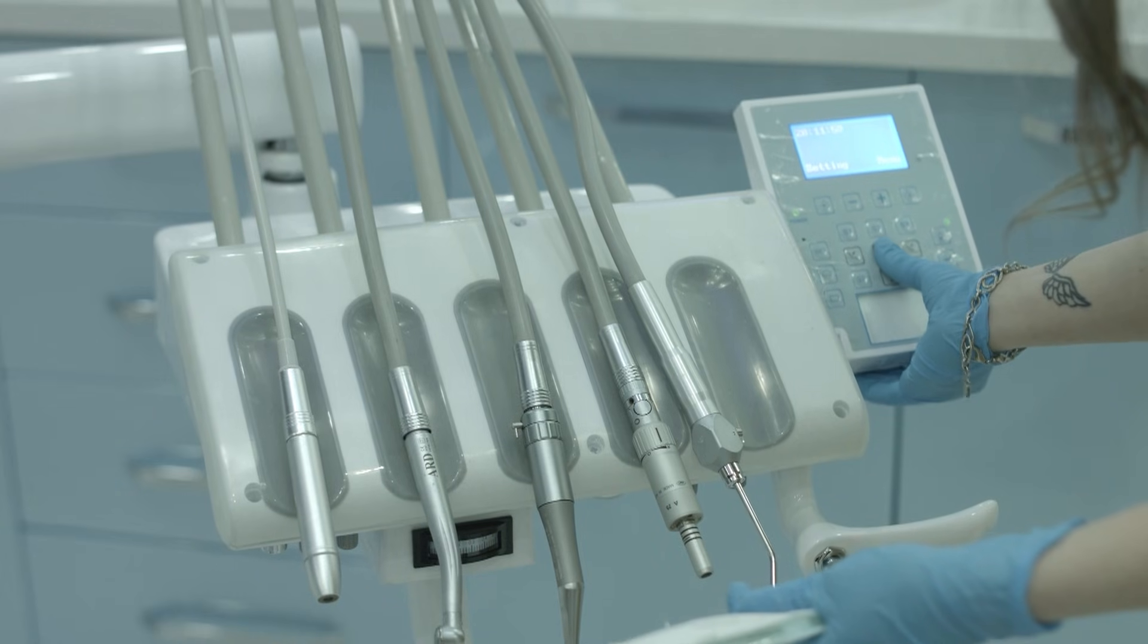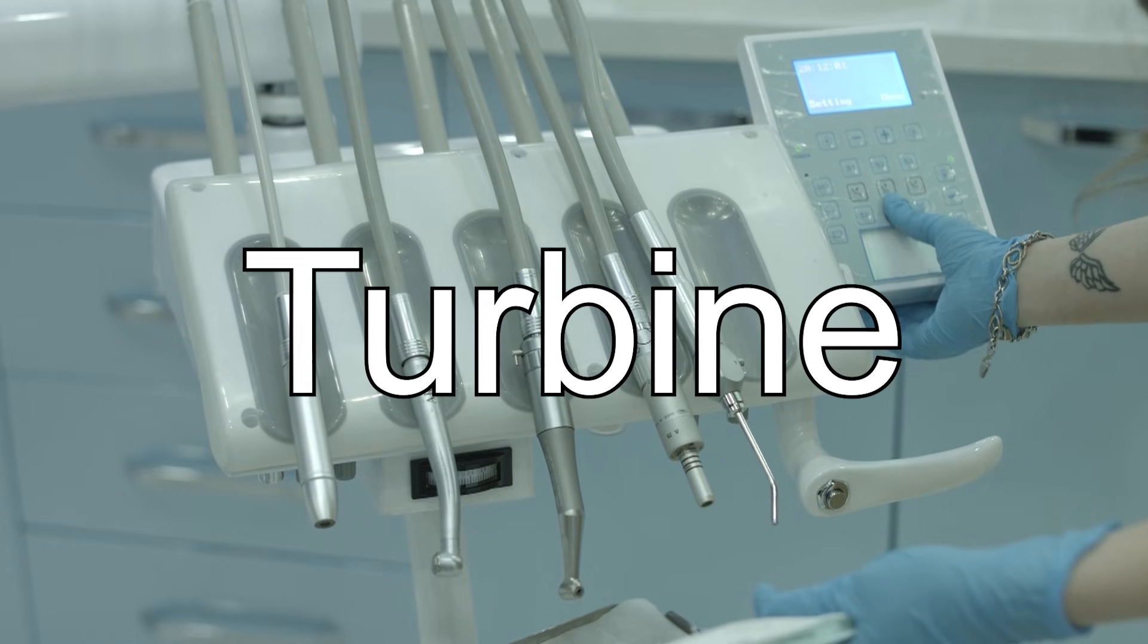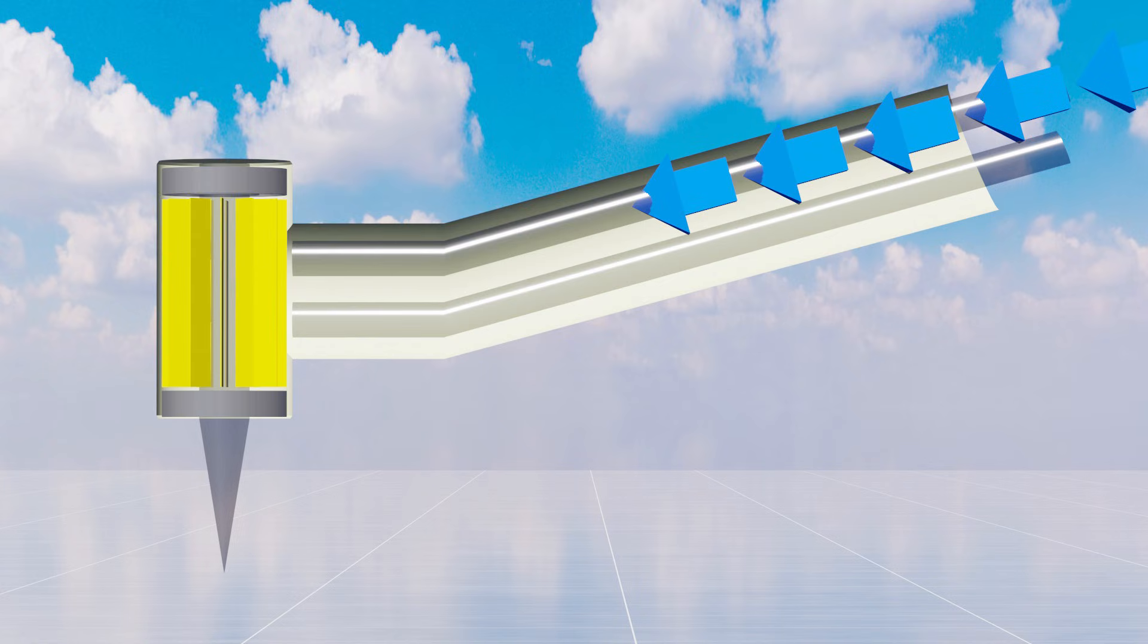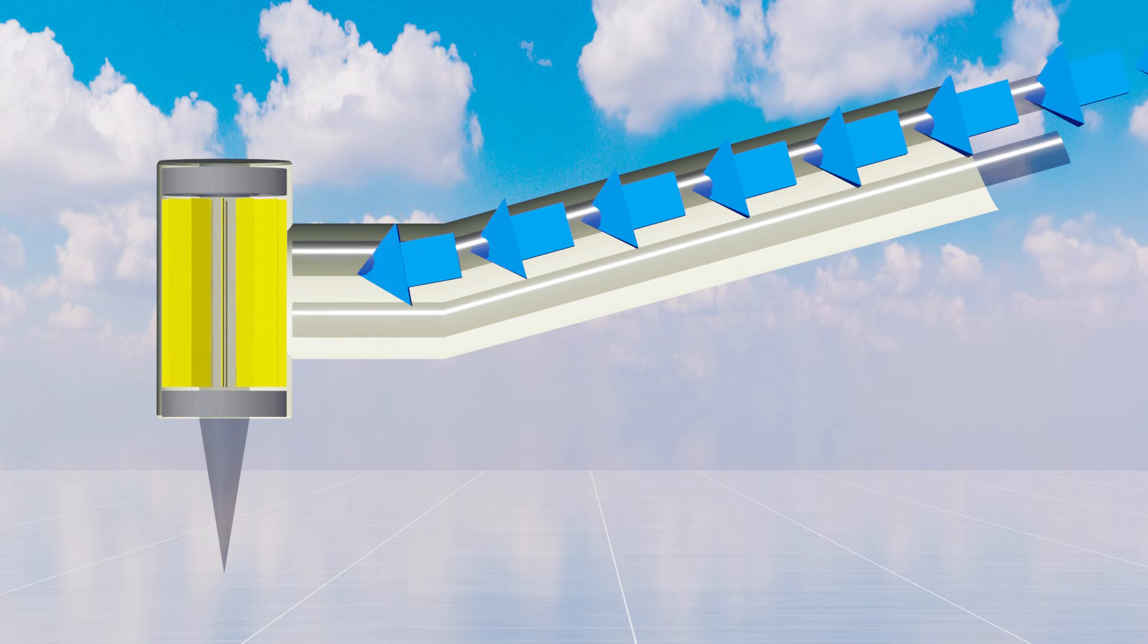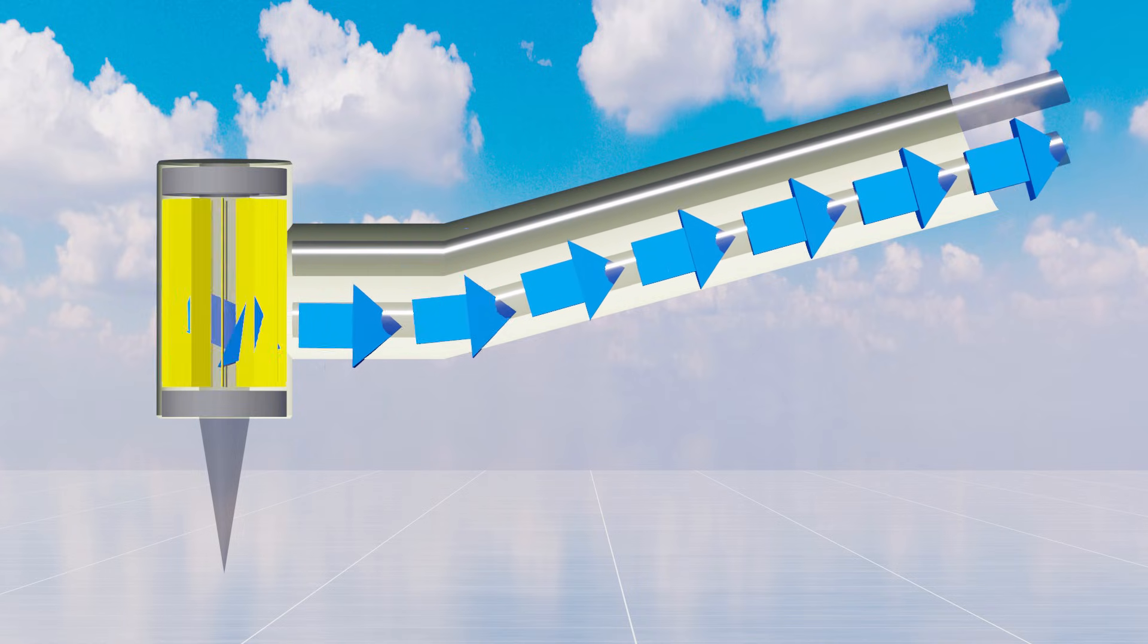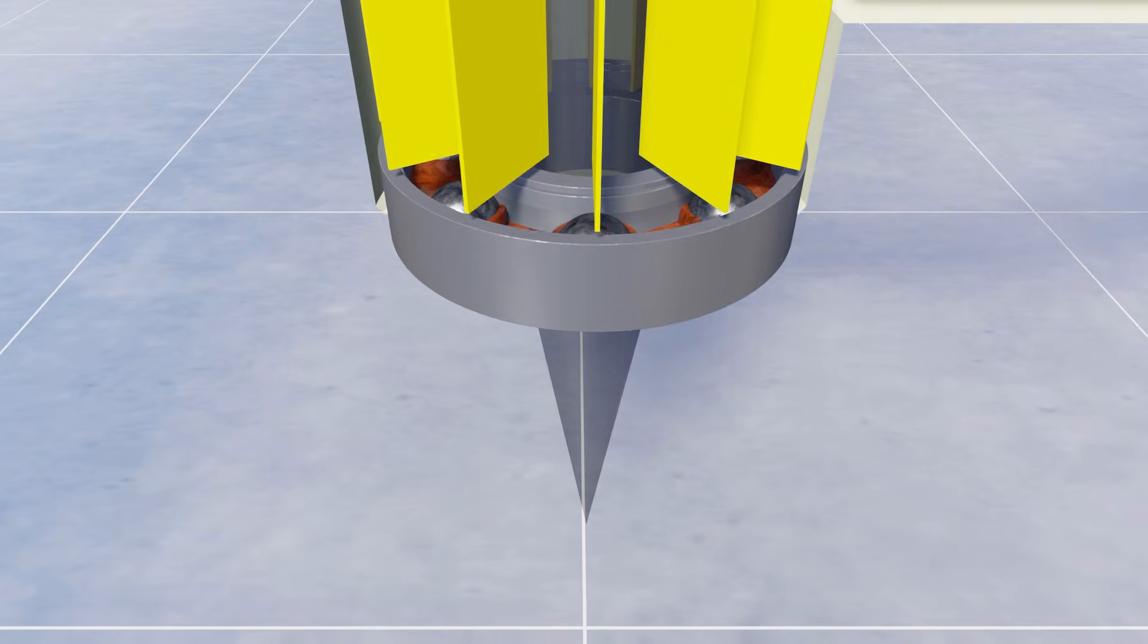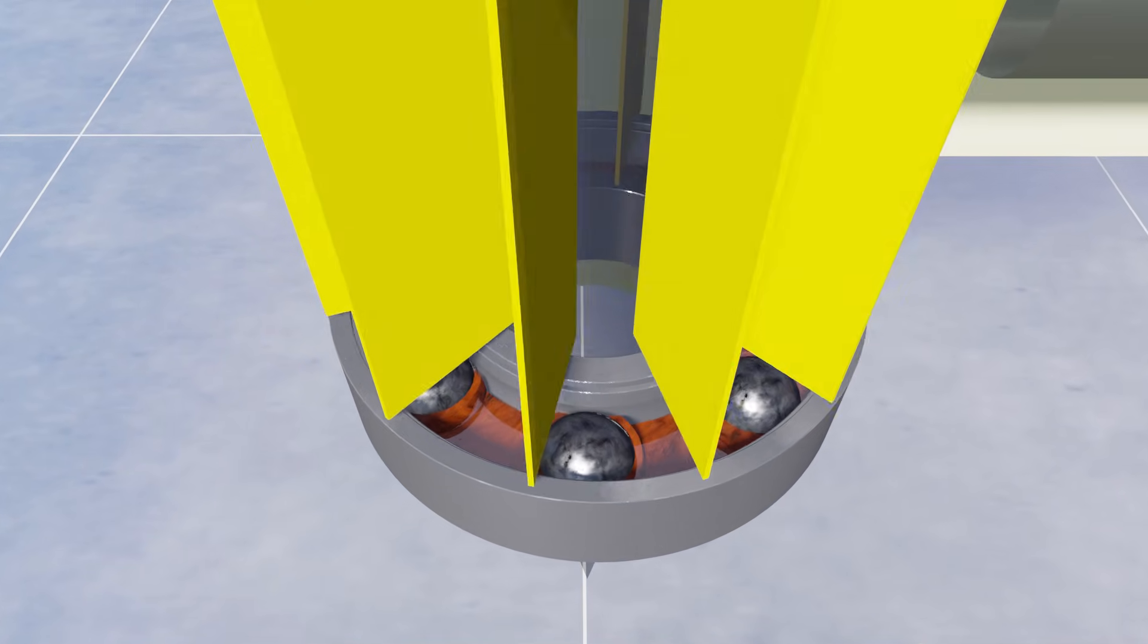For example, dentists use a device called a turbine, which also contains bearings. If simplified, air is fed into the turbine's tip, causing the blades to spin and rotate the drill. Bearings keep the drill shaft perfectly aligned while allowing it to rotate smoothly.